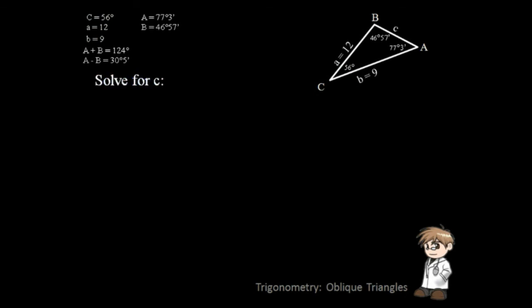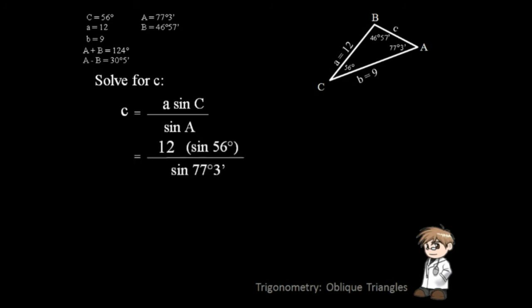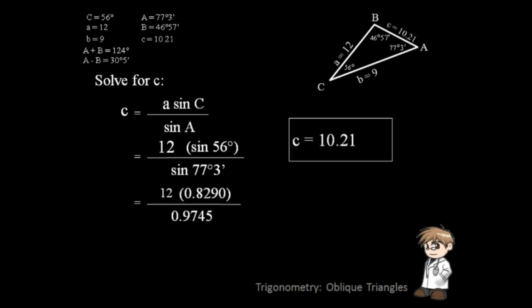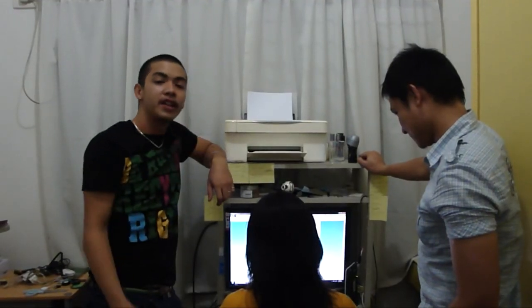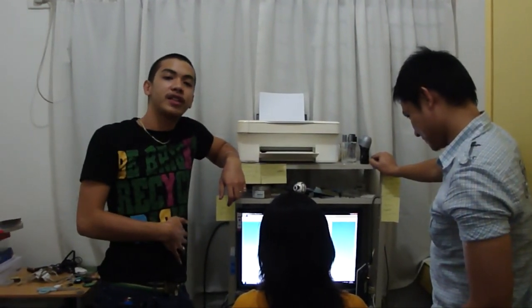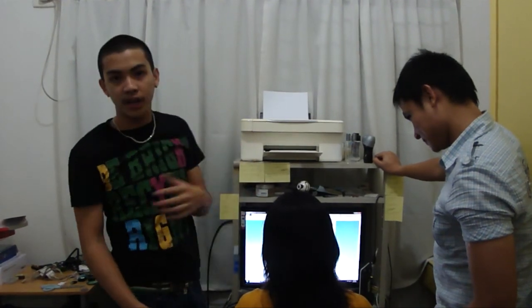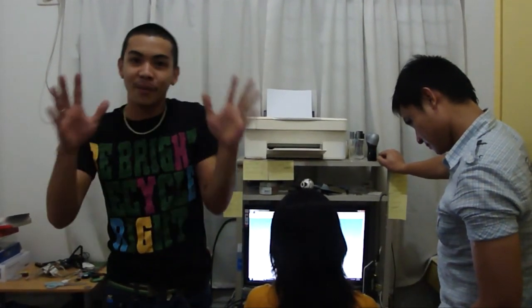Moving on, let's solve for side C. To get the value of side C, simply use the Law of Sine with the equation shown. This ends our tutorial for the Law of Tangent. Next up is how to get the area of triangles — rest up and fire up the next video if you're ready to take on the area of triangles.